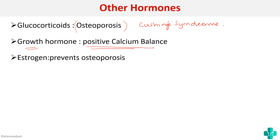Estrogen prevents osteoporosis by inhibiting bone resorption. That is why during menopause, when estrogen decreases, females develop osteoporosis. These three hormones — glucocorticoids, growth hormone, and estrogen — are additional hormones to remember in calcium homeostasis.